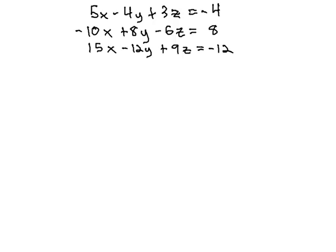In this video, we're going to solve a system of equations with three variables where something odd could happen along the way. We have 5x minus 4y plus 3z equals negative 4, negative 10x plus 8y minus 6z equals 8, and 15x minus 12y plus 9z equals negative 12.